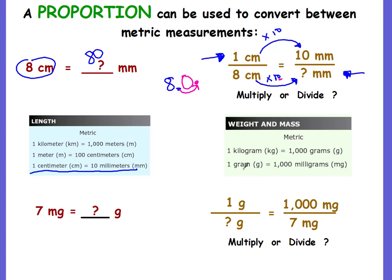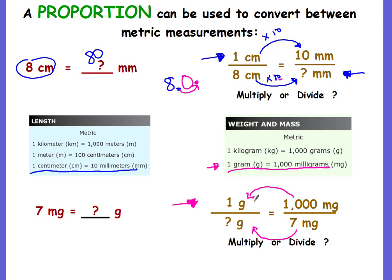Our second example: seven milligrams — we want to convert these milligrams into grams. Look at your chart and find which is larger: milligrams or grams. The gram is larger. The chart tells us one gram is equivalent to 1,000 milligrams. That's our unit rate. Write it: one gram equals 1,000 milligrams — that's the top part of the proportion. The bottom: we don't know how many grams, so that's the unknown; we know there are seven milligrams, so that goes under the milligram side.